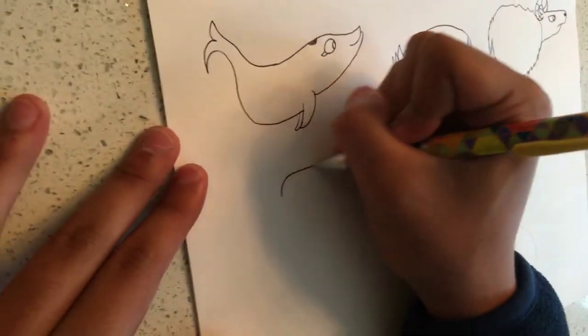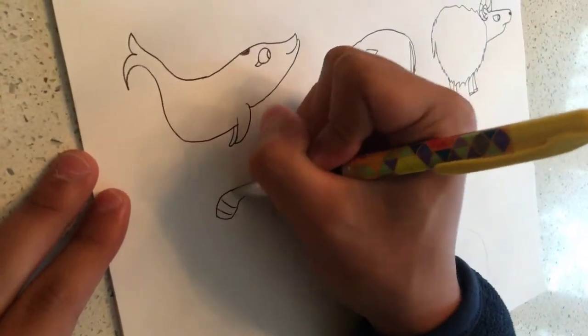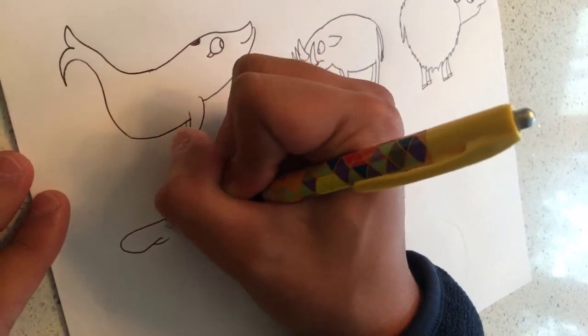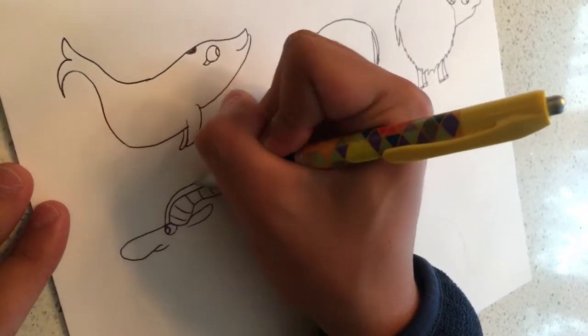B is for blue sheep. The blue sheep is also known as the bharal. The blue sheep can live in the Himalayas.